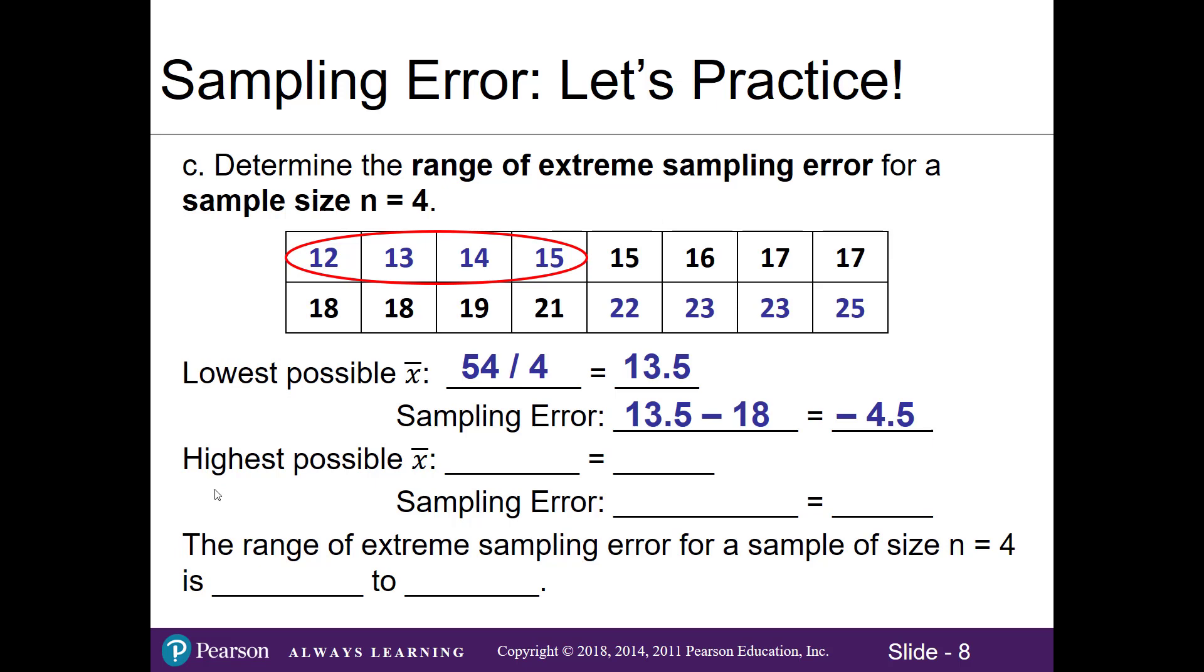Now we want to find the highest possible sample mean. In our four biggest numbers here in blue, we'll go ahead and find the sample mean of these four numbers. I'll add up these values and divide by 4, so I get 93 ÷ 4, and when I plug that into my calculator I get 23.25. To find my sampling error I'll take my sample mean of 23.25 and subtract the 18 again from Part A, which gives us a sampling error of 5.25.